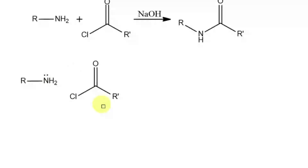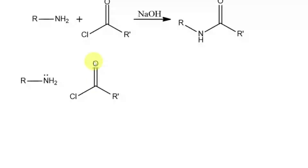Now let us have a look at the mechanism of the reaction. The nitrogen has a lone pair, which means this is going to be the negative center in this reaction. And this carbonyl carbon atom is going to be the positive center, as the oxygen is electronegative and pulls electrons towards it. That means the carbon is going to have a delta positive charge, while a corresponding delta negative charge is on this oxygen.